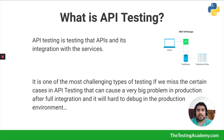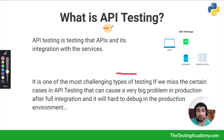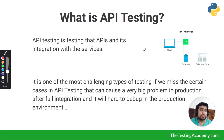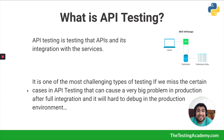API testing is simply testing the API and its integration with other services. It is one of the most challenging types of software testing. If we miss certain cases in API testing it can cause big problems, because APIs are accessed by clients to get information from the server. If APIs are returning bad behavior, clients will have a problem — you've probably seen your login not working, or Facebook's UI breaking — that is because their APIs were not working properly.